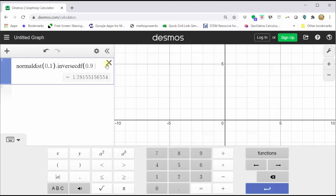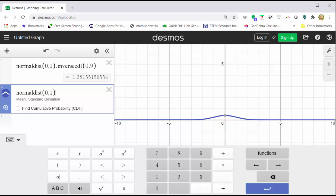Let's verify this by going down to cell two by pressing enter. Go back to functions, click normal distribution, zero comma one, close parenthesis. Now let's click the box find cumulative probability.